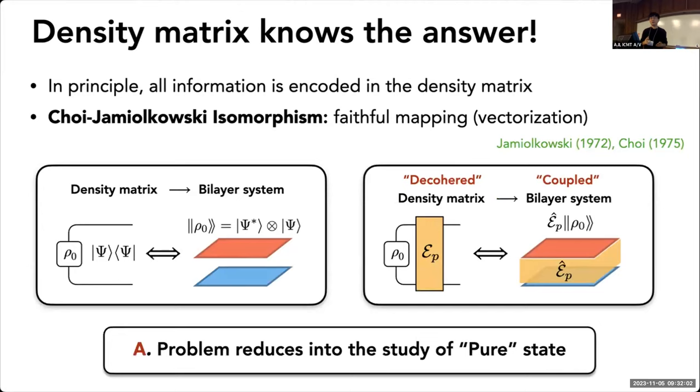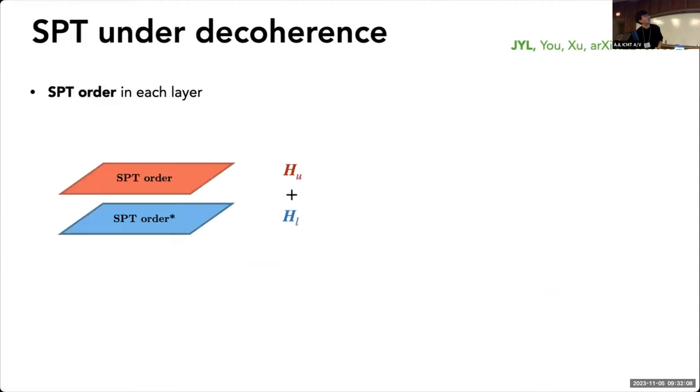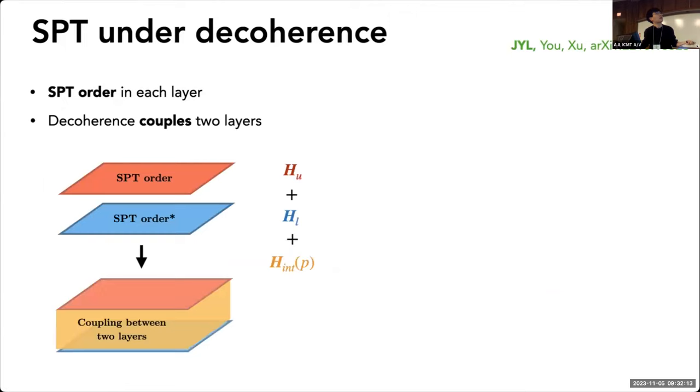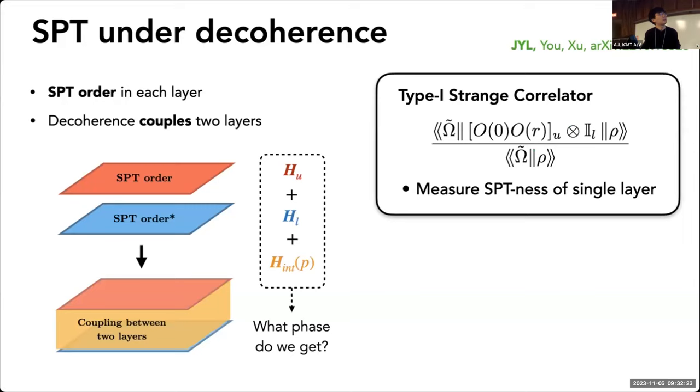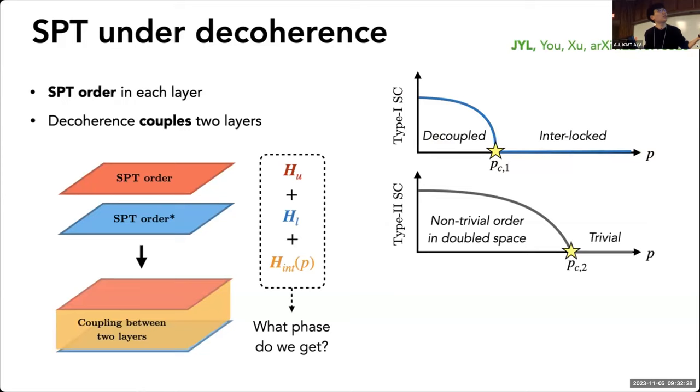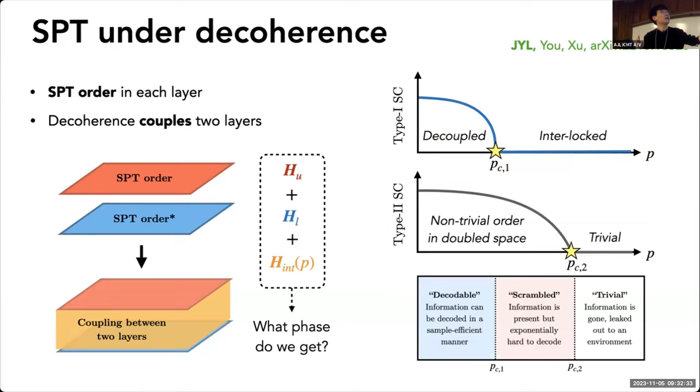The problem reduces to studying pure state, which we're familiar with. What I can do is imagine there are two SPT orders with coupling between two layers, and I can inspect what the order parameters are—what kind of phase we get in this coupled Hamiltonian defined in double Hilbert space. I can define different types of correlation functions. I can show there's a type that measures decoupling of these two layers that undergoes phase transition. I can measure quantity that captures non-trivialness of this entire wave function in double Hilbert space that undergoes another phase transition. So there's a hierarchy of transitions.